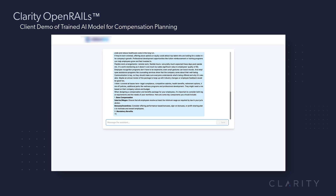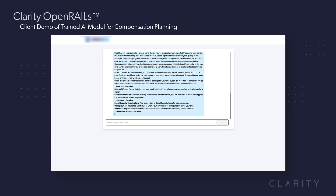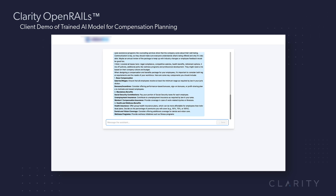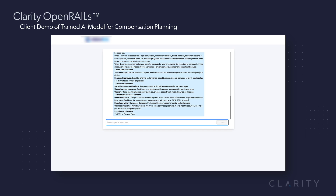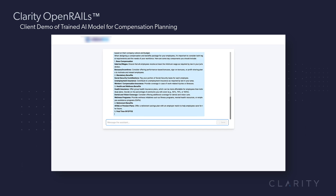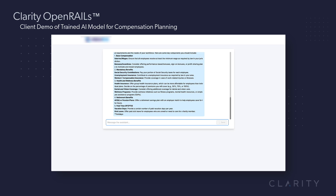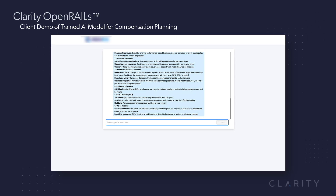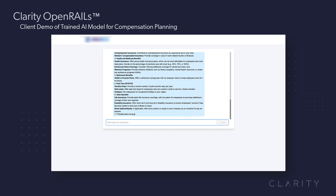Now at the bottom it's starting to say: here's the package. Base compensation should include salary, wages, bonuses, and incentives. Number two, mandatory benefits — it talks about social security contributions, unemployment insurance, and workers' comp. Number three, health and wellness. Number four, retirement benefits. Number five, PTO. And it breaks down all of these individual items so that this can be communicated directly to the inquirer.